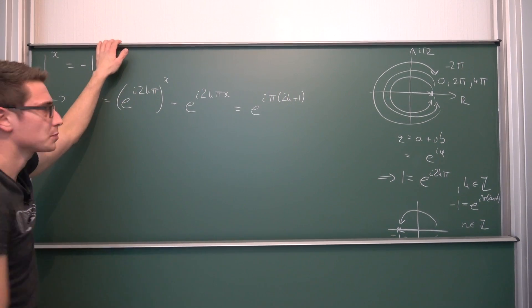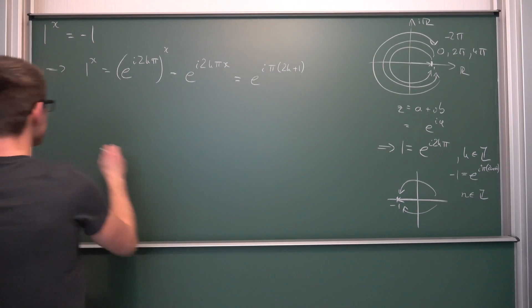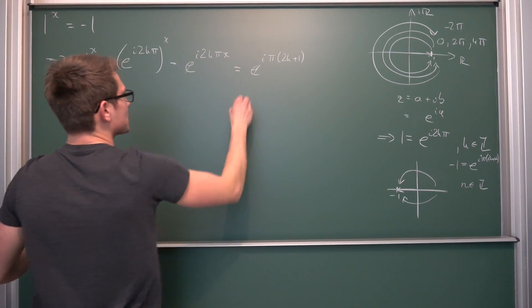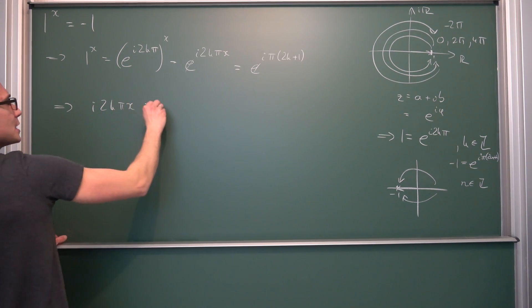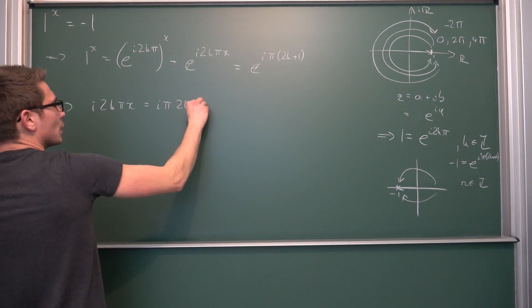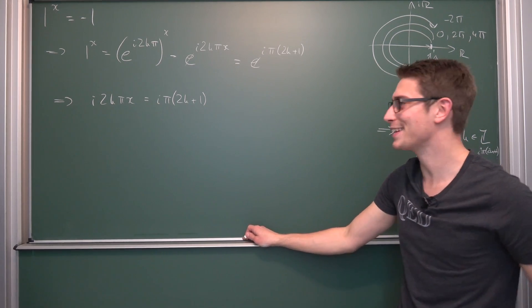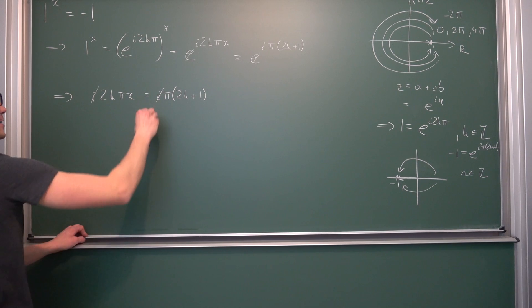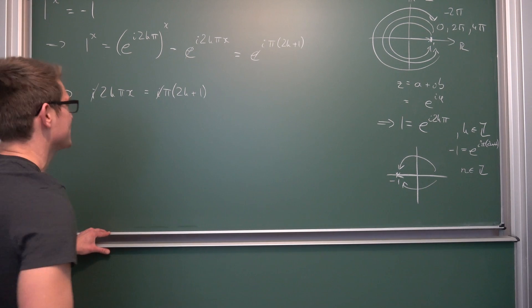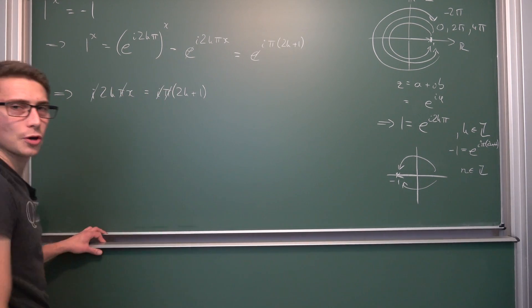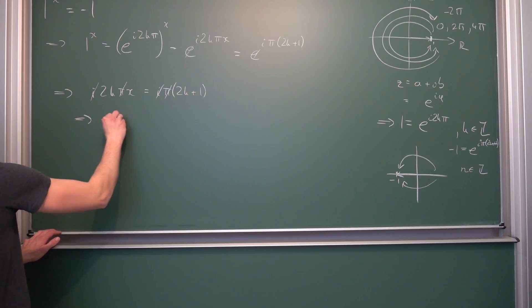And now we can actually solve for x. We can start comparing our exponents that we got right here, or we are going to take the complex logarithm on both sides. In any way, e is going to cancel out. i*2kπ*x is equal to iπ(2n+1). Now we are going to notice a few very funky things happening. Namely, our i's are going to cancel out. The i's are going away. That's crazy. Meaning, it takes a real value. Also, the π's are going to cancel out. We can now solve for x safely.